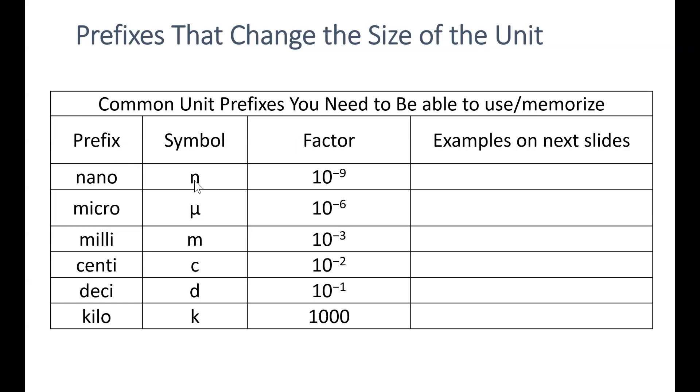So the prefix nano, symbolized by a lowercase n, is a factor of 10 to the negative 9th. Micro, symbolized by the Greek letter mu, or sometimes by the letter u or mc, is a 10 to the negative 6th factor.